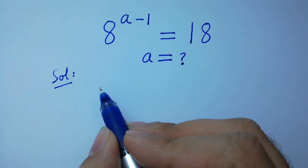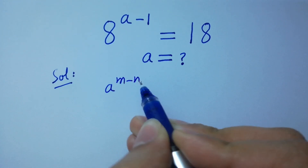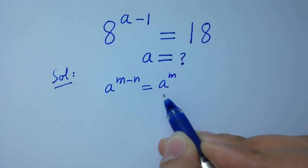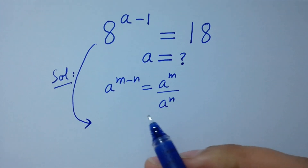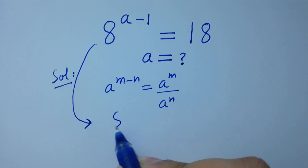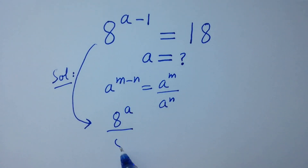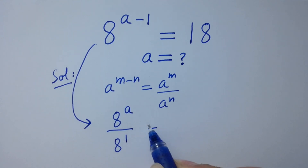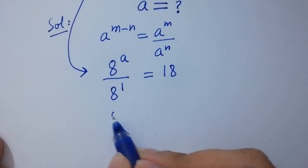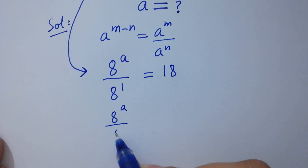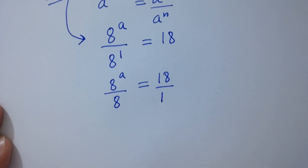As we know, a to the power m minus n equals a to the power m over a to the power n. Then it will be 8 to the power a over 8 to the power 1 equals 18, which is the same as 8 to the power a over 8 equals 18 over 1. By cross multiplication,